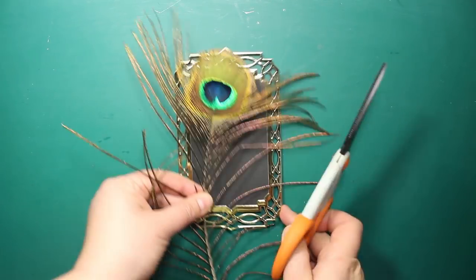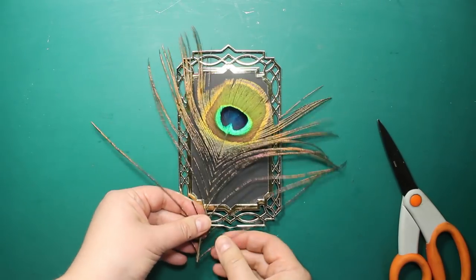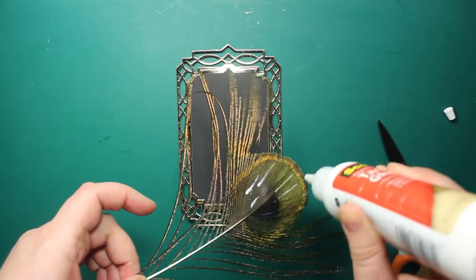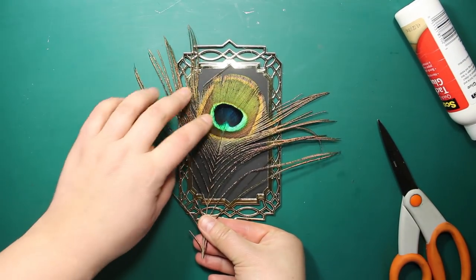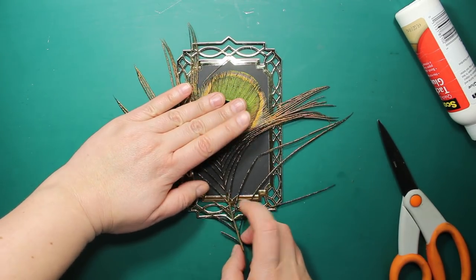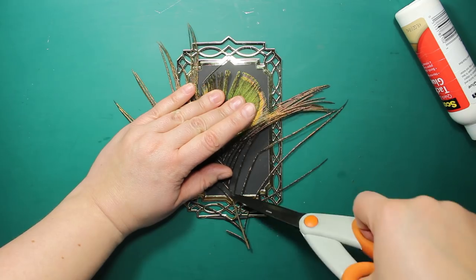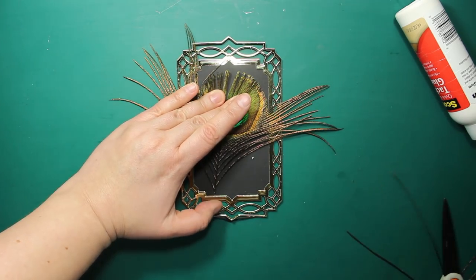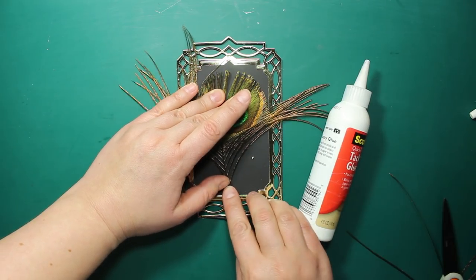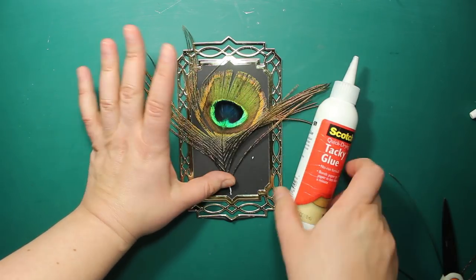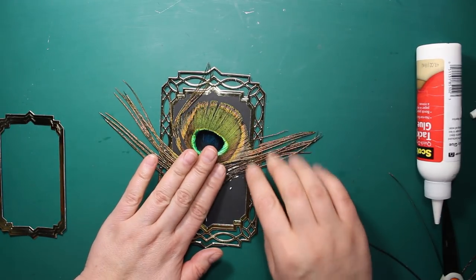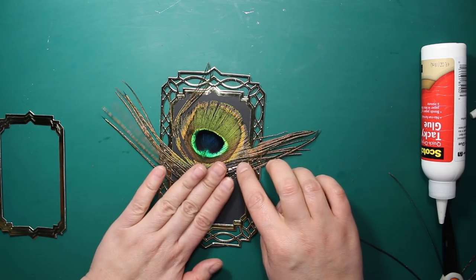Then I'm going to trim the peacock feather to the size of the frame. I'll be using Quick Drying Tacky Glue by Scotch to adhere it to the cardstock. Although it dries clear, I try to apply as little glue as possible. Then I will also stick down the stem. I keep arranging the feather inside the frame and then I'll trim off everything that hangs out.